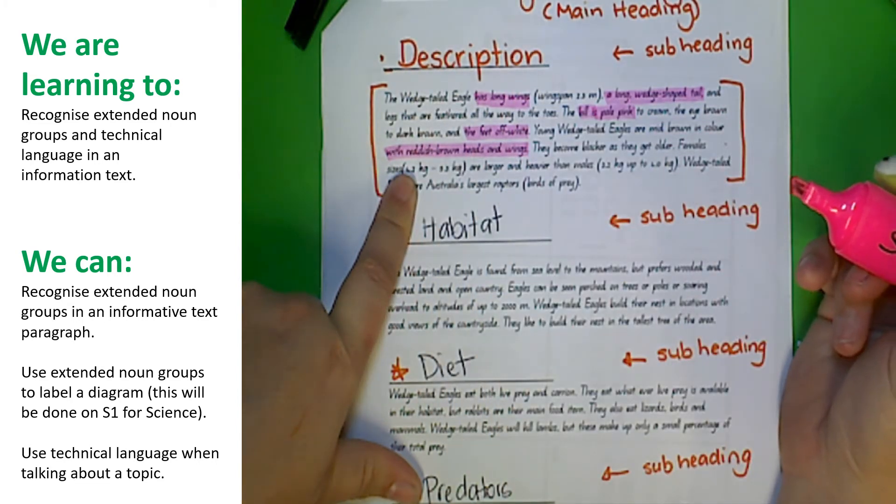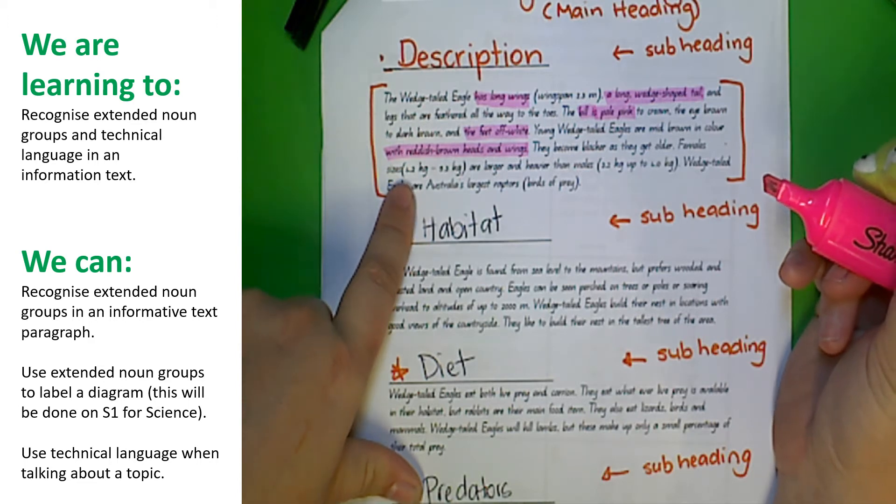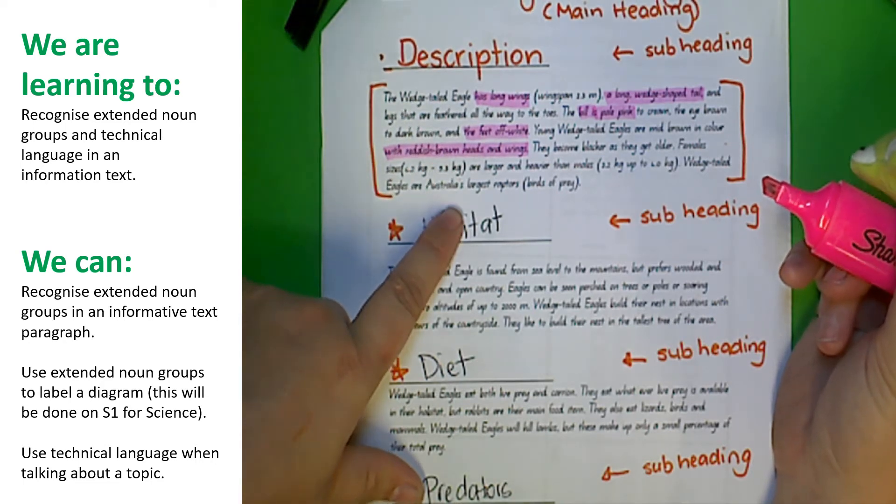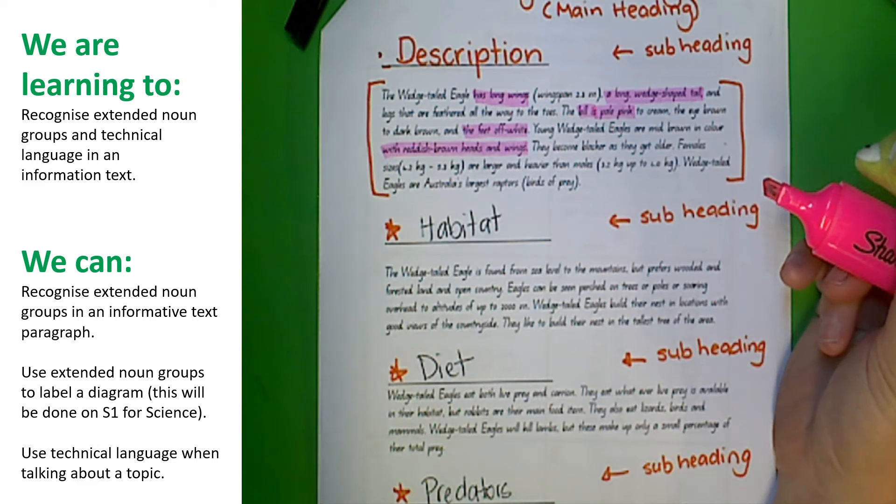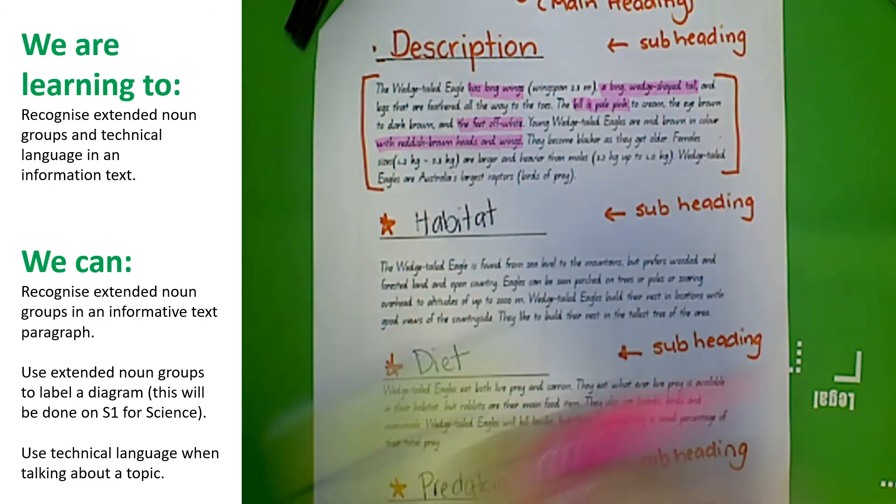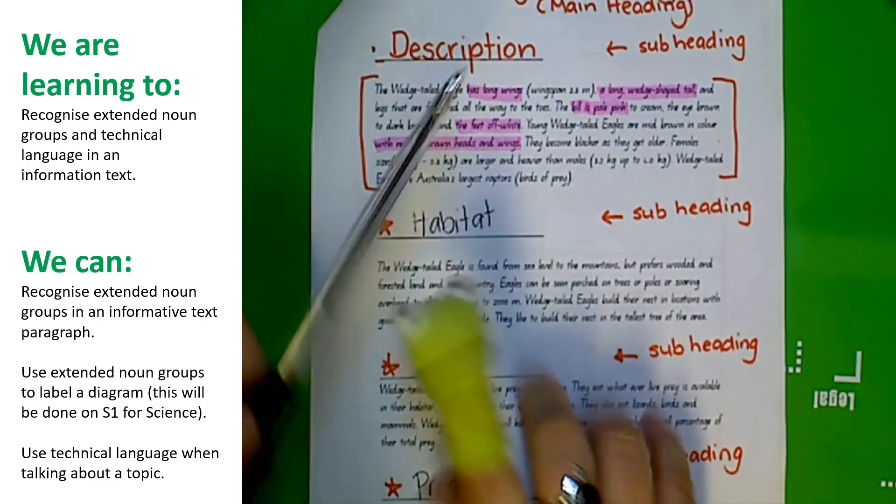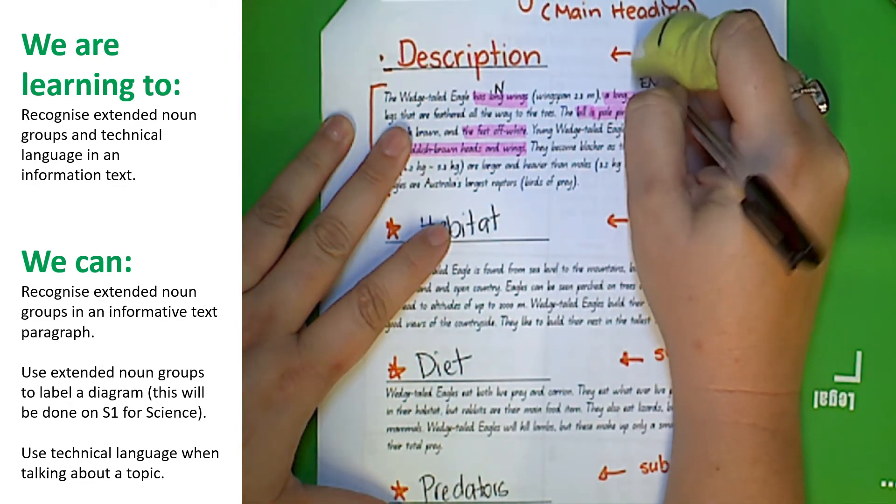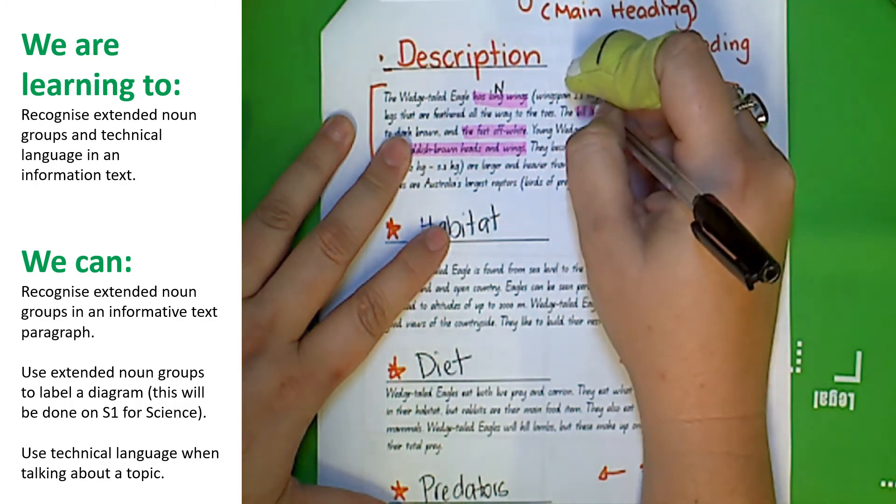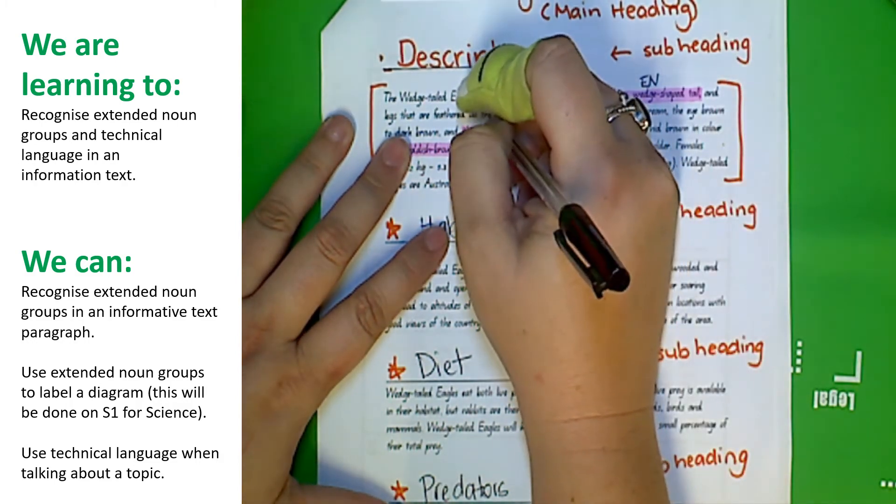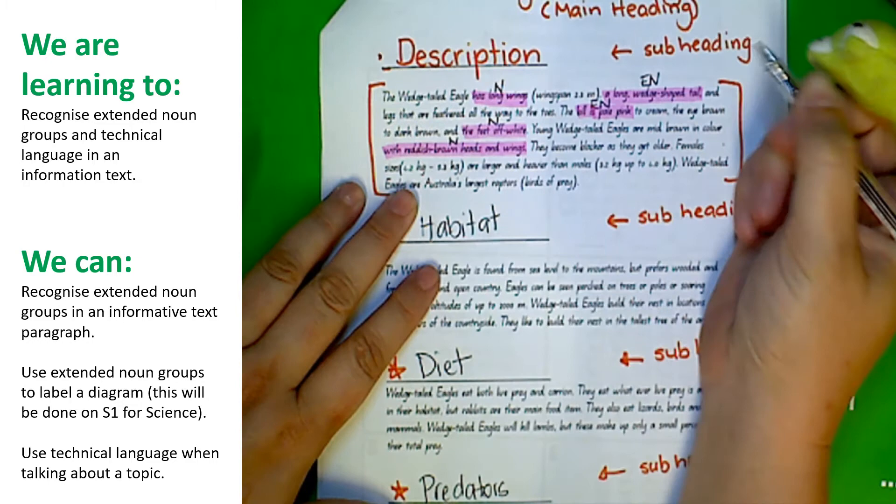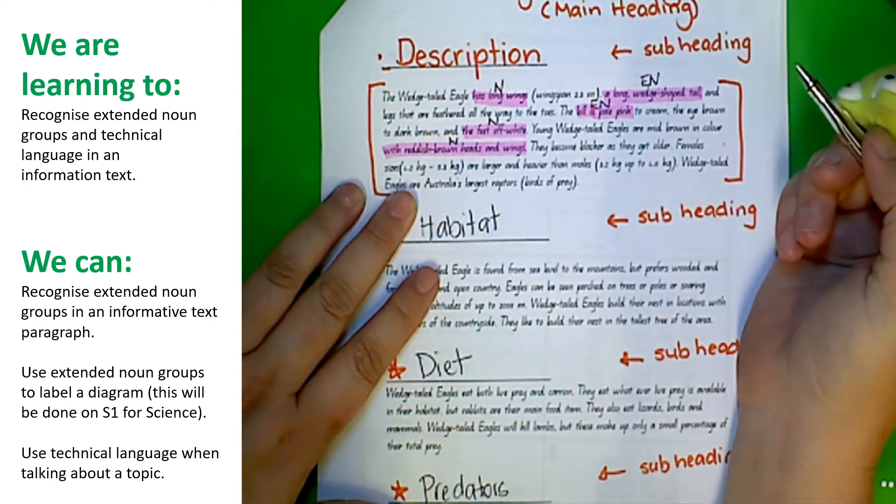Young wedgetail eagles are mid brown in color with reddish brown heads and wings. They become blacker as they get older. Female sizes are larger and heavier than male. Wedgetail eagles are Australia's largest raptors, which is birds of prey. So there are the extended noun groups that I have found for this. Let me just write N for noun group, EN for extended noun group. EN, this one is a noun group, this one is a noun group. So we've got two extended noun groups and three noun groups.